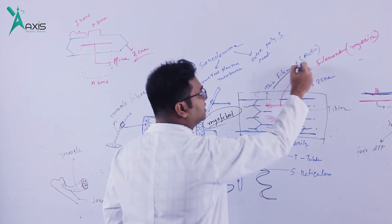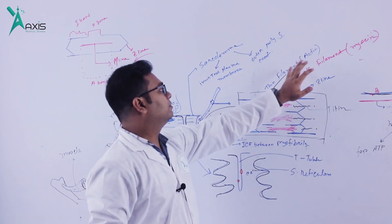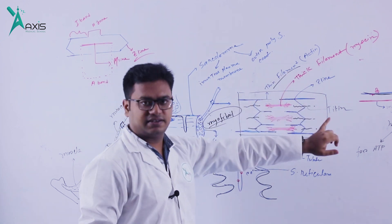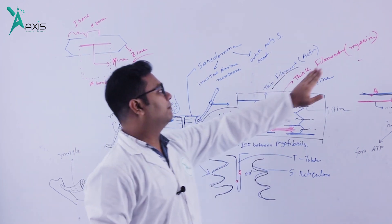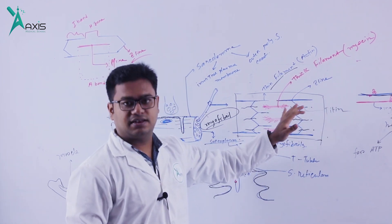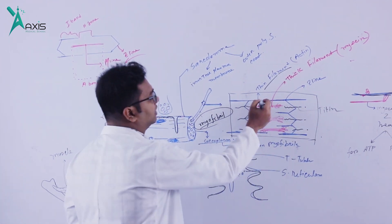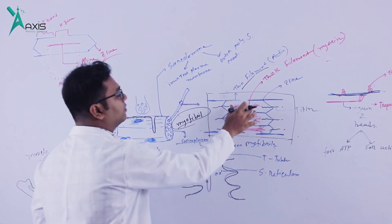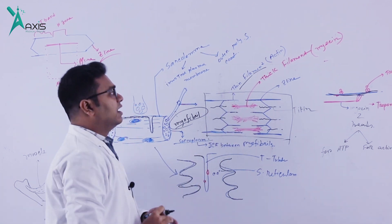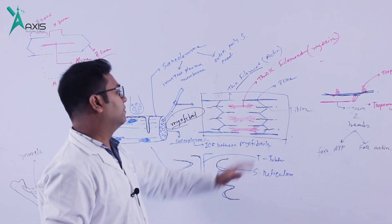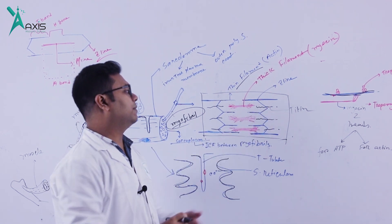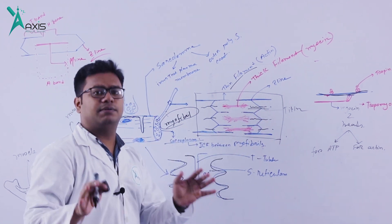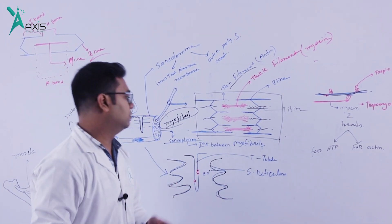The thin filament is actin — we show this in blue color. The thick filament is myosin — we show this in black color. There is also the thick filament structure, and the protein titin is also present here.